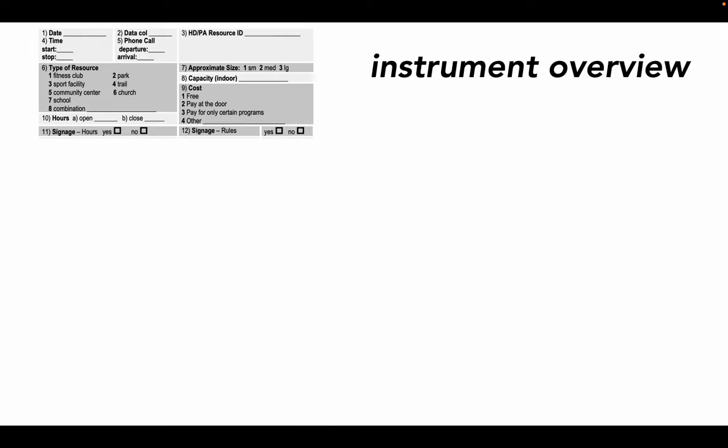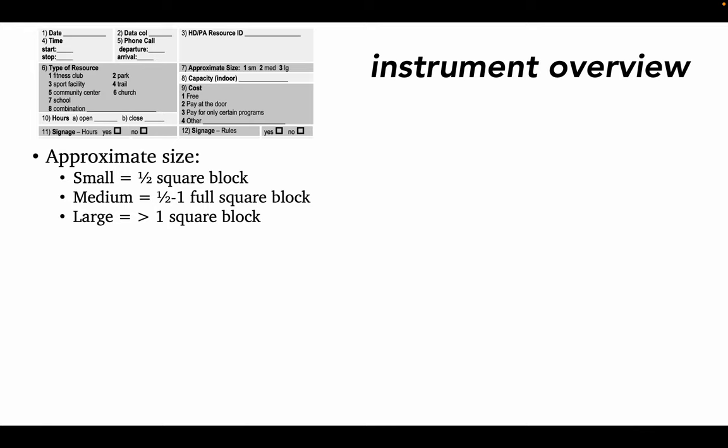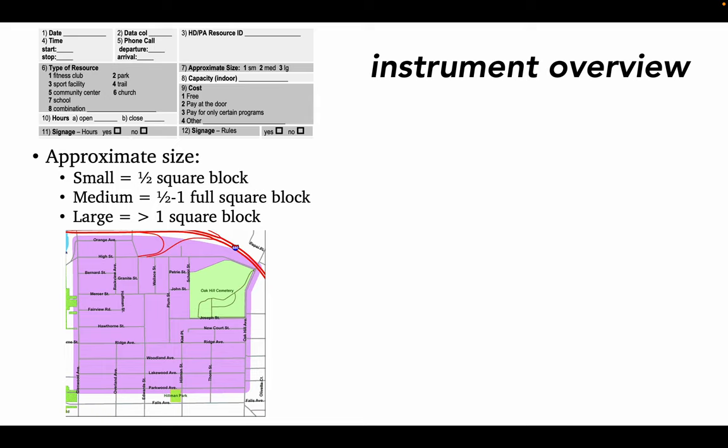First, under the administrative data, you'll select the type of resource you're assessing and its approximate size. The rules of thumb for assessing size are as follows: small is anything less than or equal to about half a city block; medium is anything between half and a full block; and large is anything bigger than a full square block. These measurements are designed around urban environments, but the size of a block will vary depending on your location.